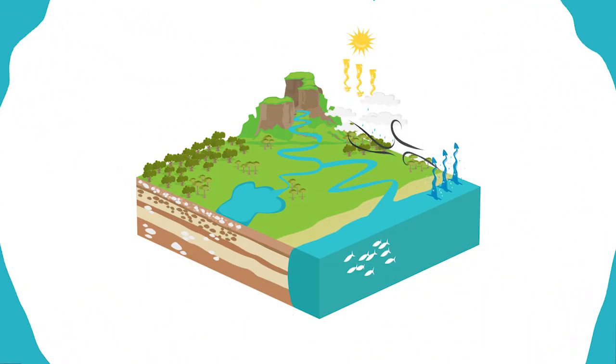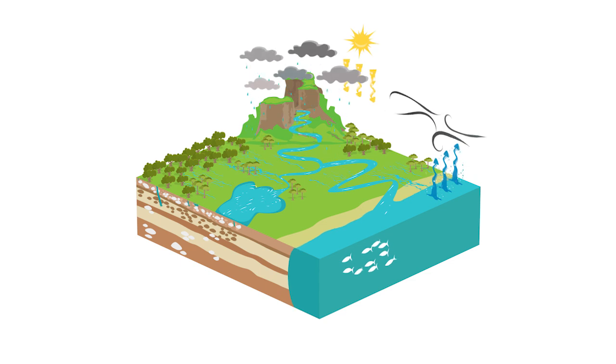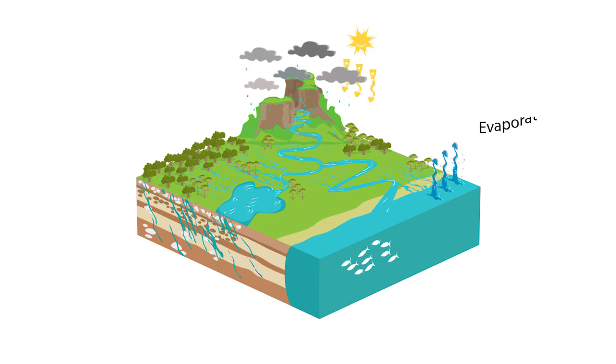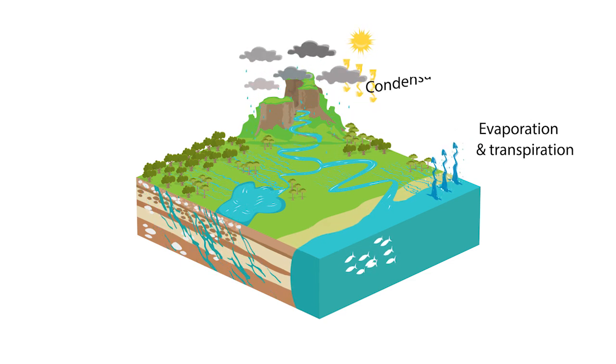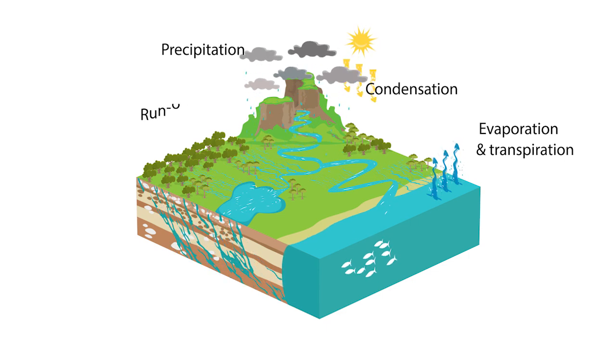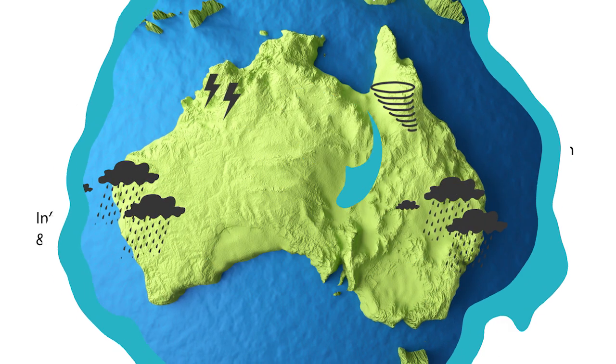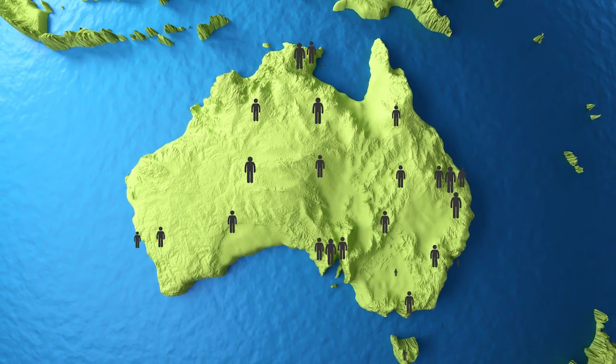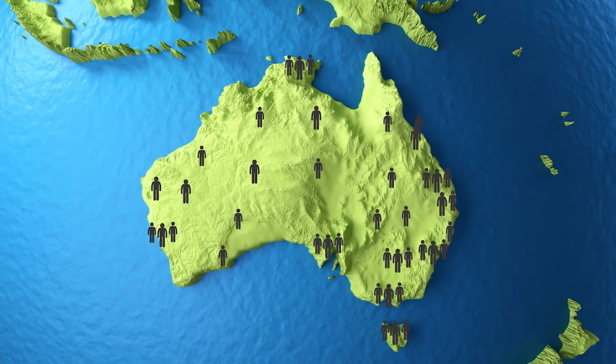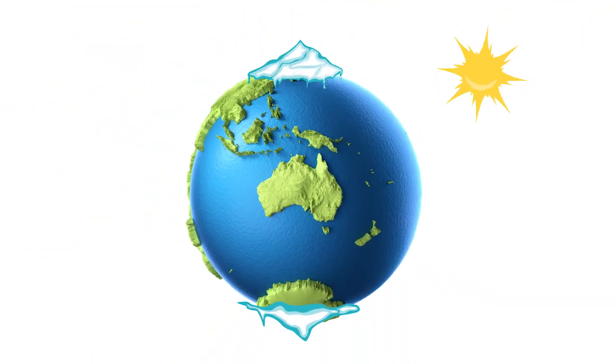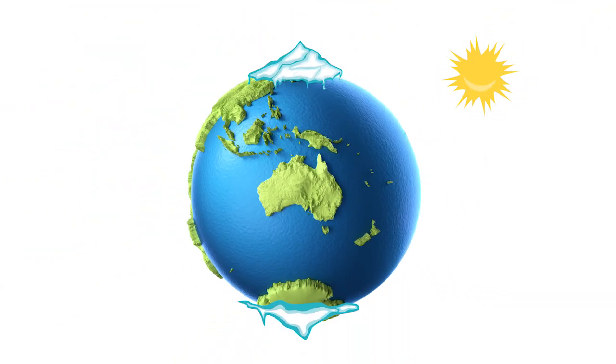Whether the water is taken up by plants and animals or it finds its way back to a waterway, the processes of evaporation, transpiration and condensation will ensure that it keeps on flowing through the natural water cycle. As our climate changes and our population grows, it is more important than ever to understand how the natural water cycle works so that we can manage it sustainably for future generations.